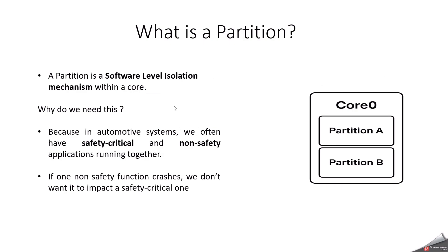What is a partition in Autosar Operating System? A partition is a logical separation within a core. It is used to isolate software applications in both time and memory. This is part of the OSEK/VDX and ISO 26262 safety concept to ensure freedom from interference between applications. In simple terms, a partition is like a sandbox that runs one or more OS applications with controlled access to memory and resources. For example, Core 0 has two partitions — Partition A for safety-critical control logic and Partition B for non-safety infotainment logic. If Partition B crashes due to a memory fault, the OS contains the fault, keeps Partition A running safely, and optionally you can restart Partition B alone. This is called application-level fault containment.